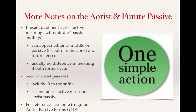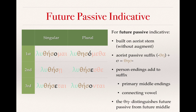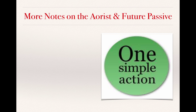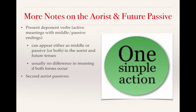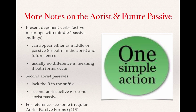A few more notes on the aorist and future passive. First, present deponent verbs — those verbs that have active meanings although they have middle-passive endings — can appear either as middle or passive, or both, in the aorist and future tenses. When both the middle and the passive occur, there is no significant difference in meaning in most cases. Also note that second aorist passives lack the theta in the suffix; they'll still have the augment but they lack the theta. Unfortunately, there is no general rule that a second aorist active will also have a second aorist passive form. For reference to some of the more common irregular aorist passive forms, see section 113 in the textbook, as well as many of the vocabulary items listed for this lesson.